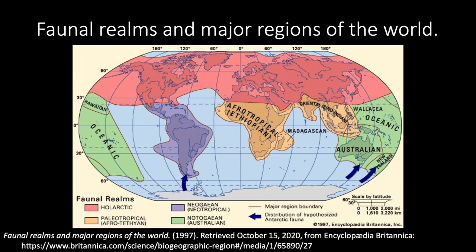Next we have the Notoguian realm, also known as the Australian realm. It begins east of the Lydekker line extending into the Pacific Ocean. It consists of four regions: the Australian, the Oceanic, New Zealand, and Hawaiian regions. The fauna of the Pacific islands, however, have much in common with the Paleotropical fauna. Endemic to this region include monotremes — the egg-laying mammals such as the platypus — and four to six orders of marsupials, different families of birds, and some fishes.